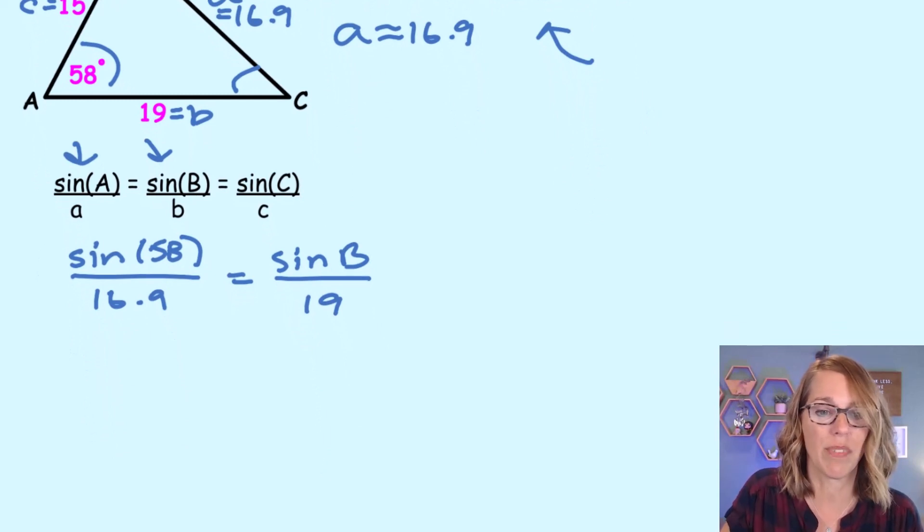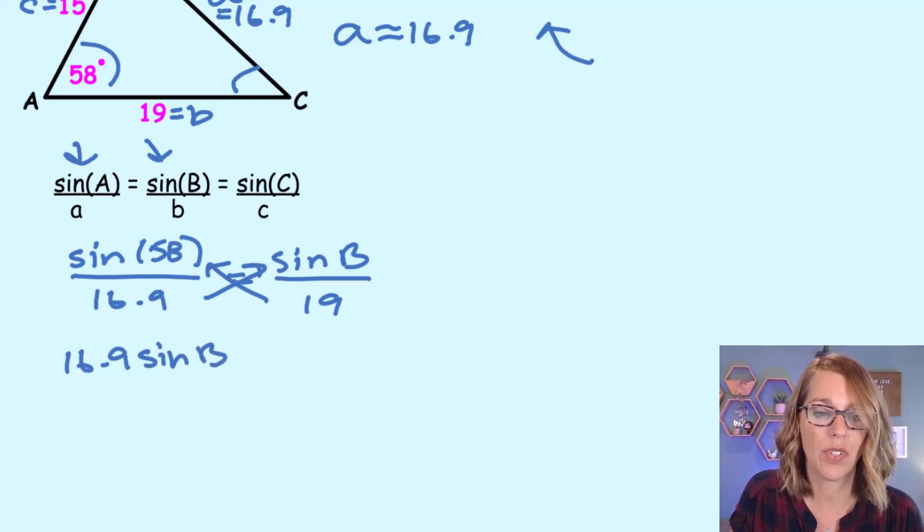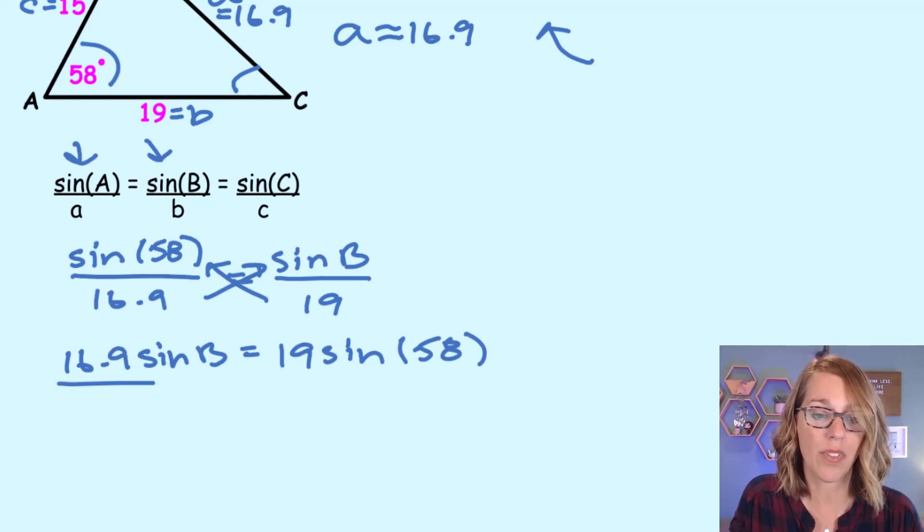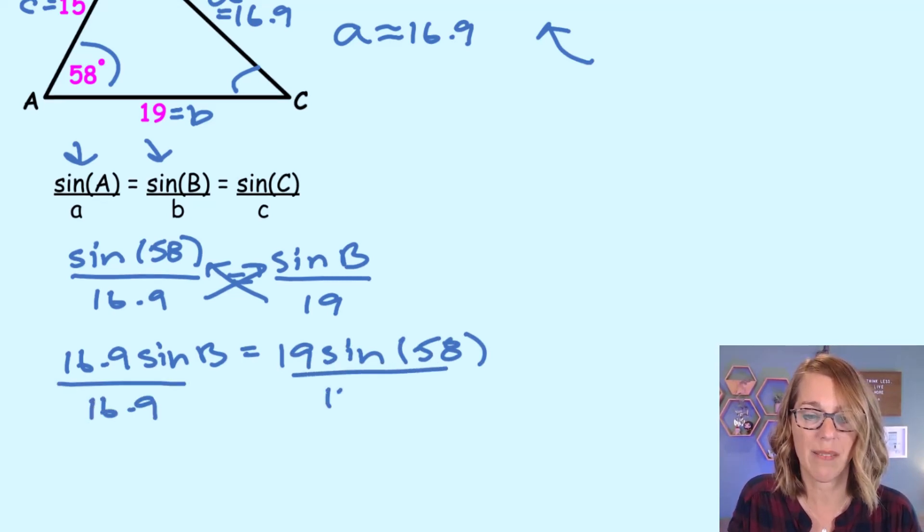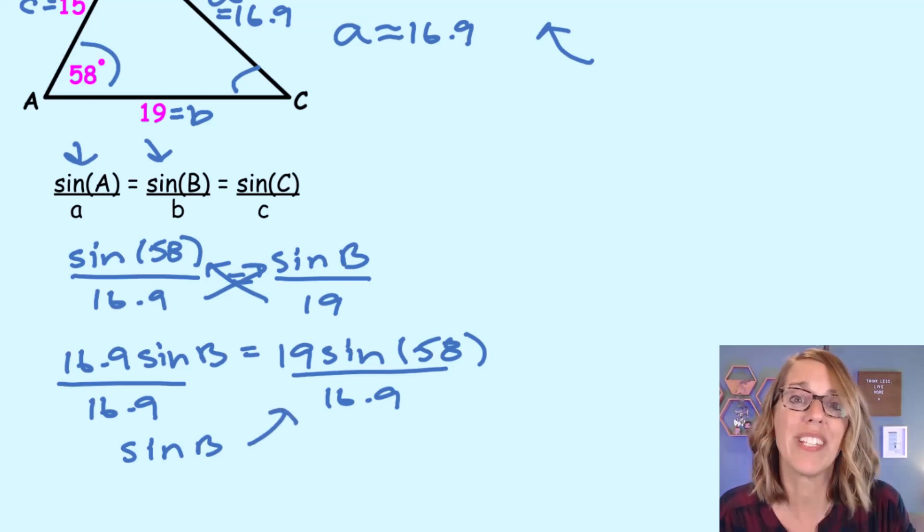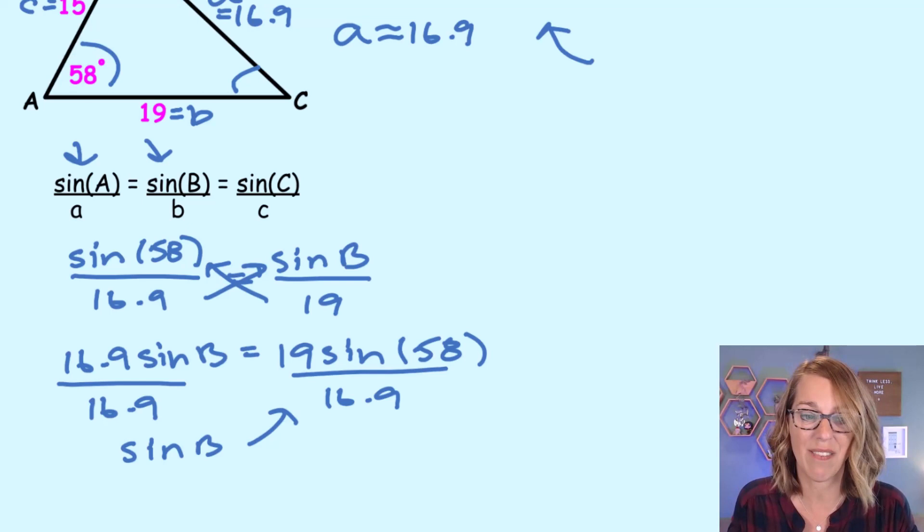I'm going to do a cross multiplication here. So cross multiplying, I get 16.9 times the sine of B is equal to 19 times the sine of 58. A couple more steps here. I need to divide both sides by 16.9, divide by 16.9, and that gives me the sine of B is equal to this. But what I really need is angle B. So I'm going to go ahead and apply a sine inverse here.